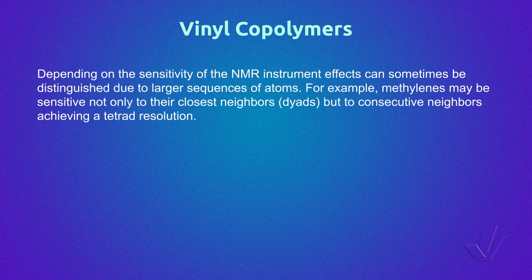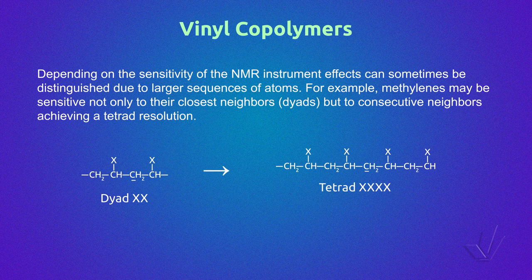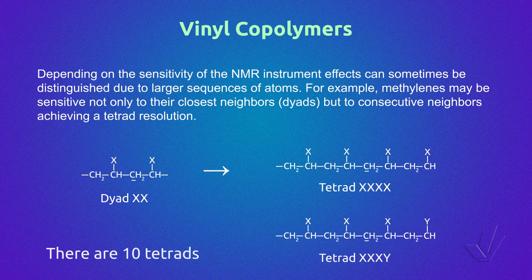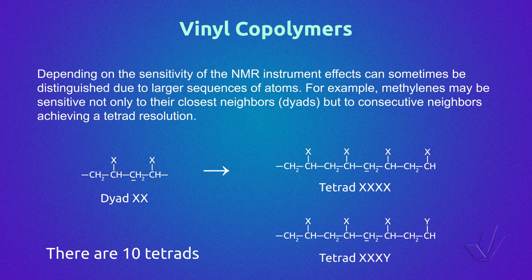Depending on the sensitivity of the NMR instrument, effects due to larger sequences of atoms can sometimes be distinguished. For example, methylene carbons may be sensitive not only to their closest neighbours (diads) but to consecutive neighbours, achieving a tetrad resolution. Examples of the tetrads XXXX or XXXY can be seen in this figure.